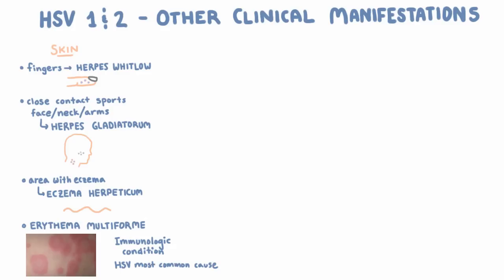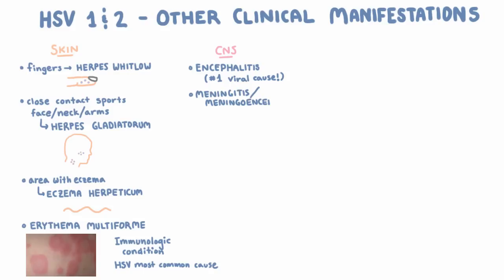Now let's move away from the skin. Herpes can, on occasion, spread more widely. For one thing, it's actually the most common cause of viral encephalitis in the U.S., and we'll hear more about that in the encephalitis lesson. It can also infect just the meninges, causing meningitis, or both, in which case it's called meningoencephalitis.